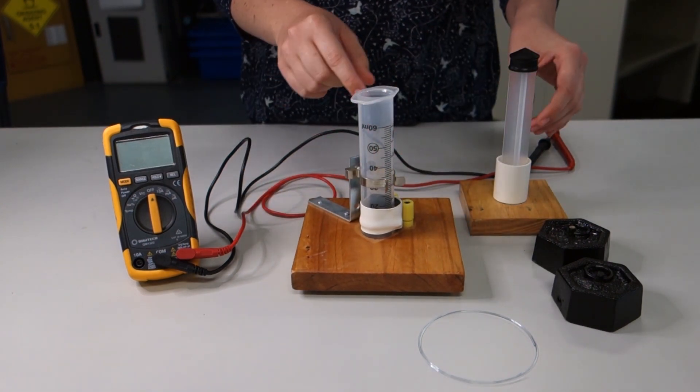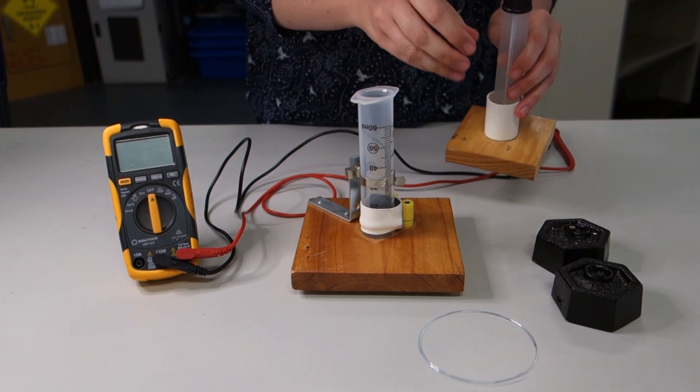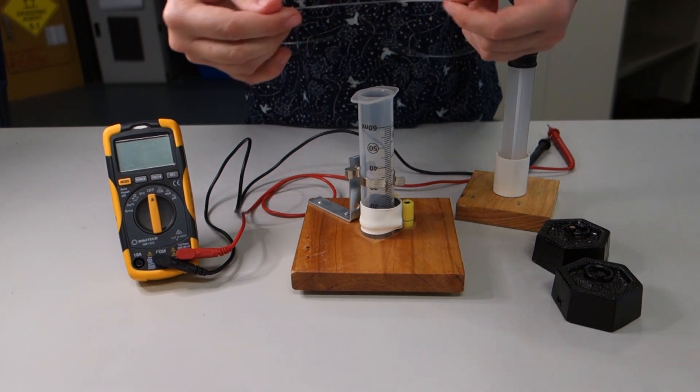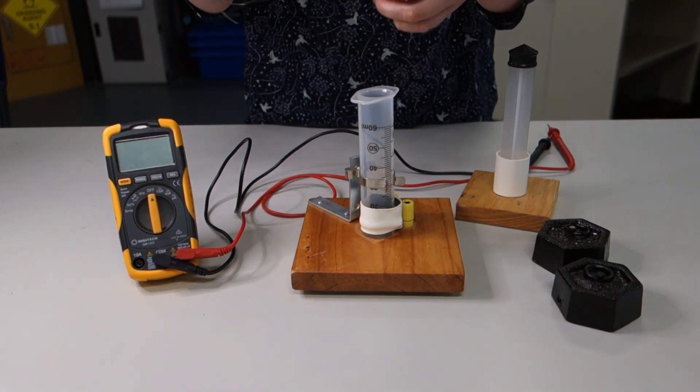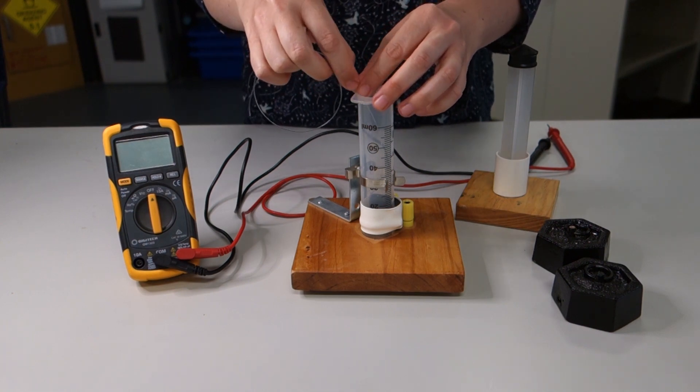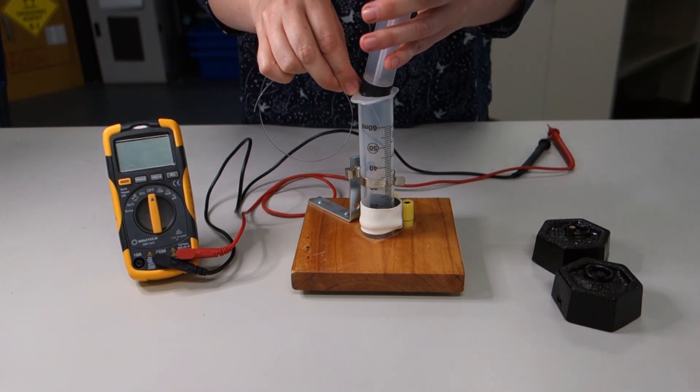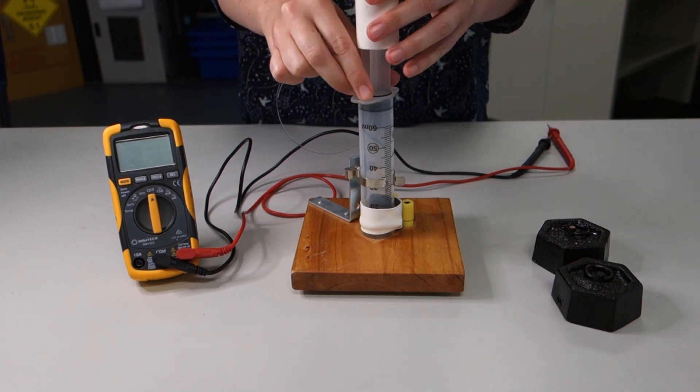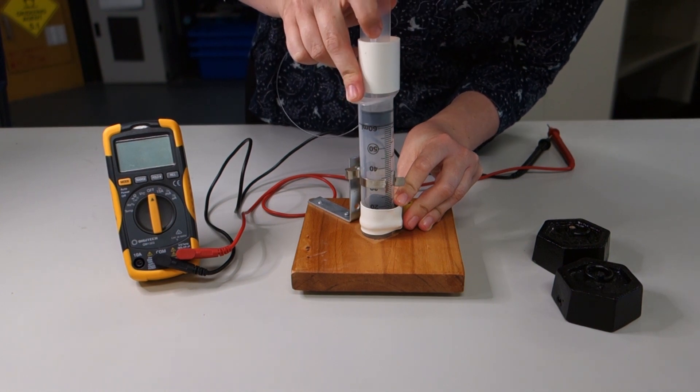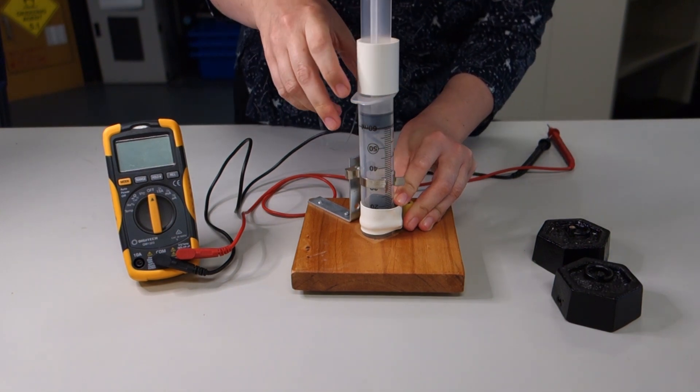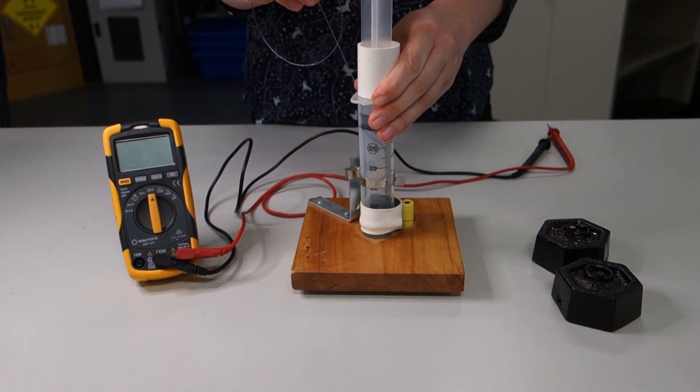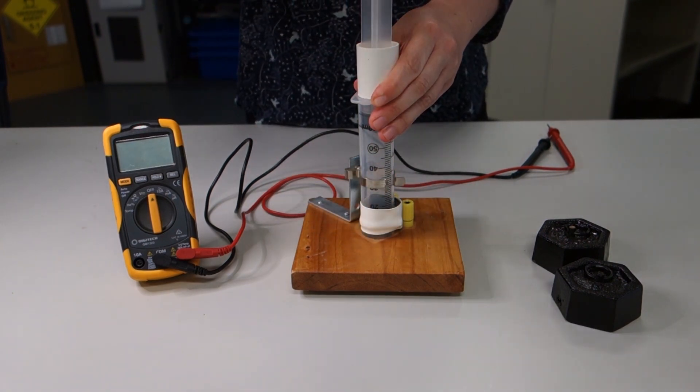To position the plunger in the syringe, use the fishing line provided to break the seal between the plunger and the body of the syringe. Position the plunger. In this case, I am going to position it at 60 mL and then remove the fishing line.